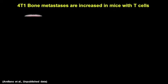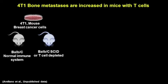For this, we aim to characterize the effect of T cells in bone metastases and then to determine if immunotherapy could be applied in their treatment. To do that, we compared the development of bone metastases from 4T1 cells — breast cancer cells from mice — between mice with a regular immune system or without T cells.